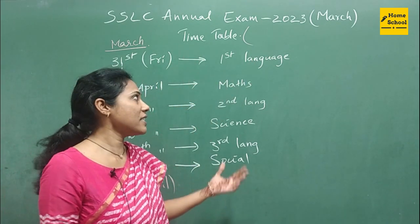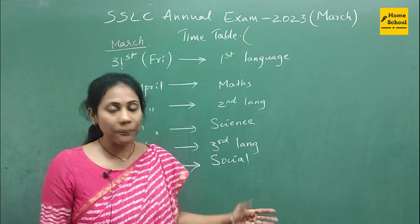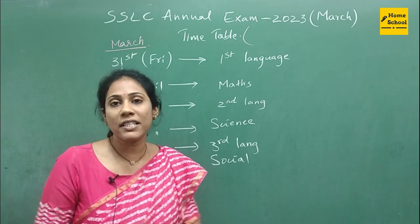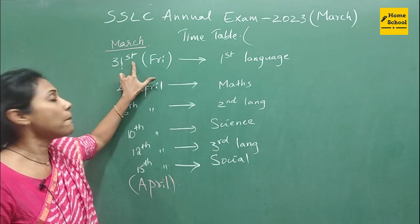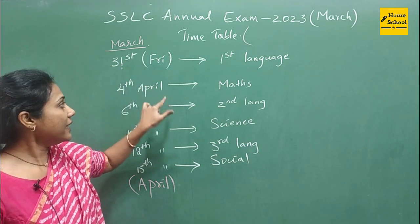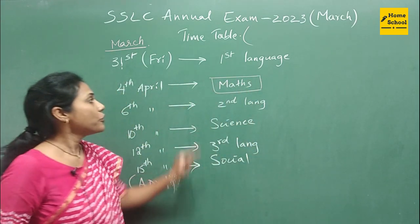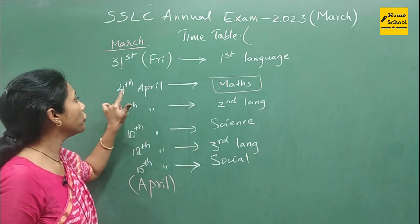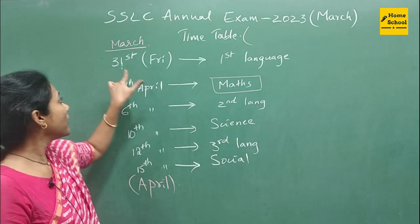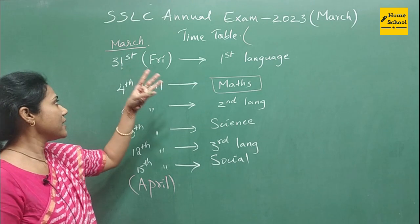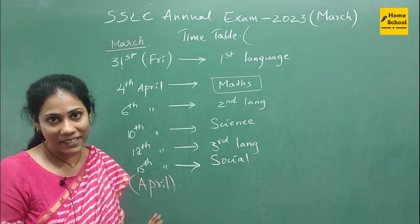On 31st March you are going to write the first language. For some of you, the first language can be English, and for some of you it can be Kannada. So whatever may be your first language, you are going to write it on 31st March. The second examination is the core subject — Mathematics — which you are going to write on 4th April. So here you have a gap of 1st, 2nd, and 3rd — three days of gap before your Mathematics examination.